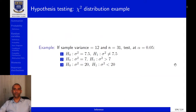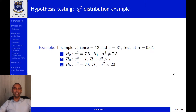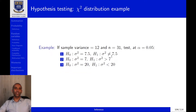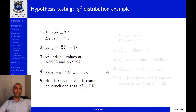Let's look at an example. We are given a sample variance of 12, a sample size of 31, and a significance level of 0.05. For the two-tailed test, the null hypothesis is that the variance equals 7.5 and the alternative is that it does not equal 7.5. Plugging numbers into the test statistic expression, we arrive at a value of 48.